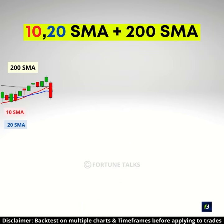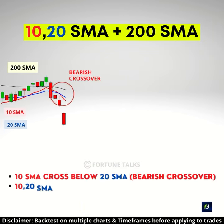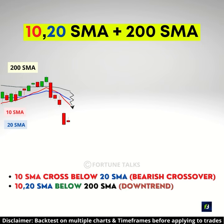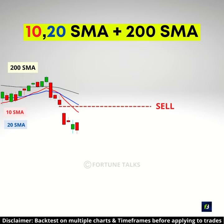If the 10 SMA crosses the 20 SMA to the downside, it indicates the possibility of a down move. And if the 10 and 20 SMA are below the 200 SMA, we will only take short positions by selling below the low of bearish reversal candlesticks.